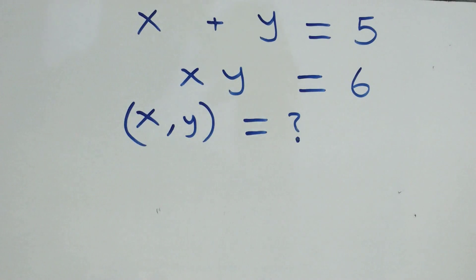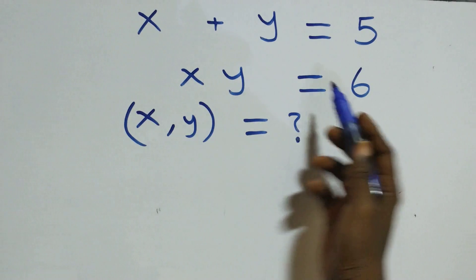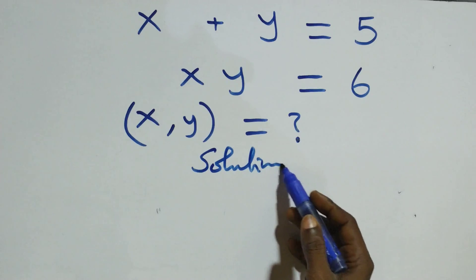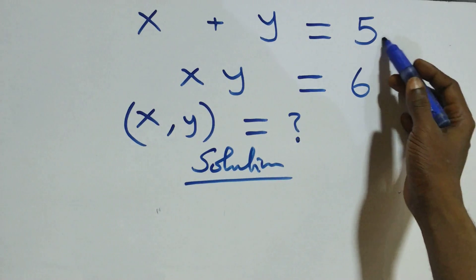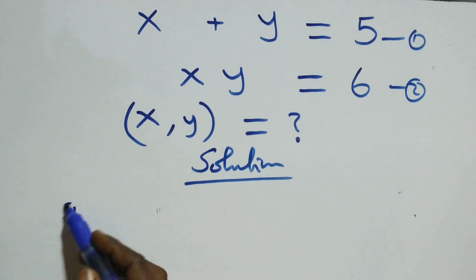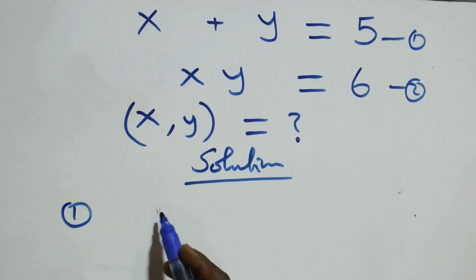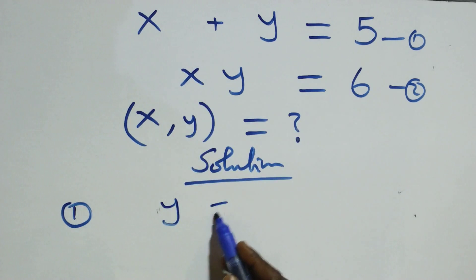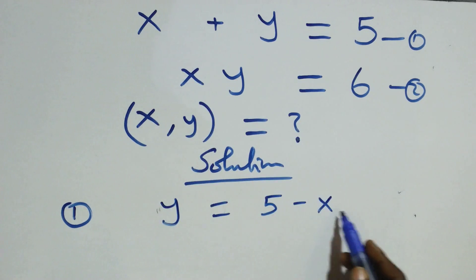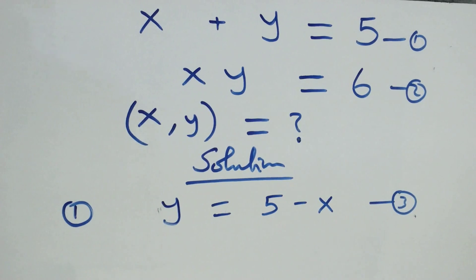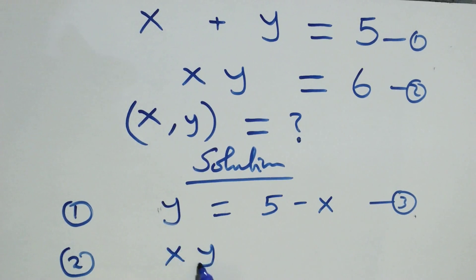Hello y'all, welcome. We're going to solve this algebra equation. We label the first equation as equation one and the second as equation two. From equation one, we make y the subject — taking x to the other side, we get y equals five minus x, and we call this equation three.